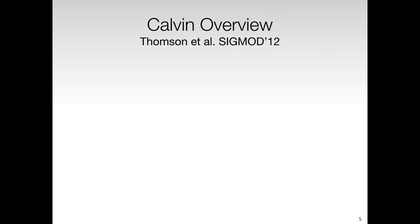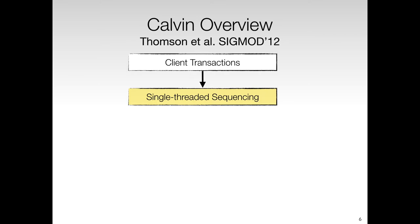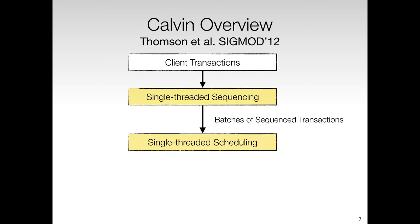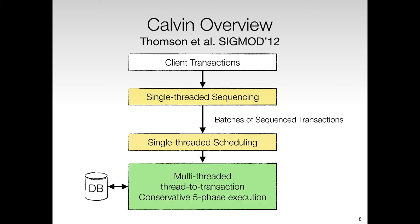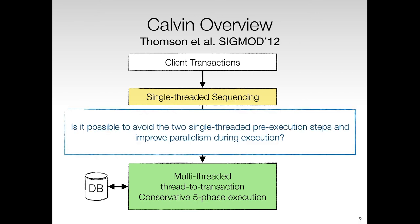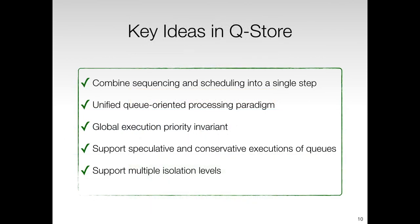I will give an overview of Calvin, which is considered the state-of-the-art in distributed deterministic transaction processing. In Calvin, client transactions are sent to a sequencing layer. Each node in Calvin runs a single sequencing thread. The sequencing layer produces batches of sequence transactions. These batches are processed by the scheduling layer, and each node has a single-threaded scheduler as well. A scheduler uses deterministic locking to schedule transactions on worker threads. Therefore, we pose the following question: is it possible to avoid the two single-threaded pre-execution steps and improve parallelism during execution? We address this question in Q-Store.